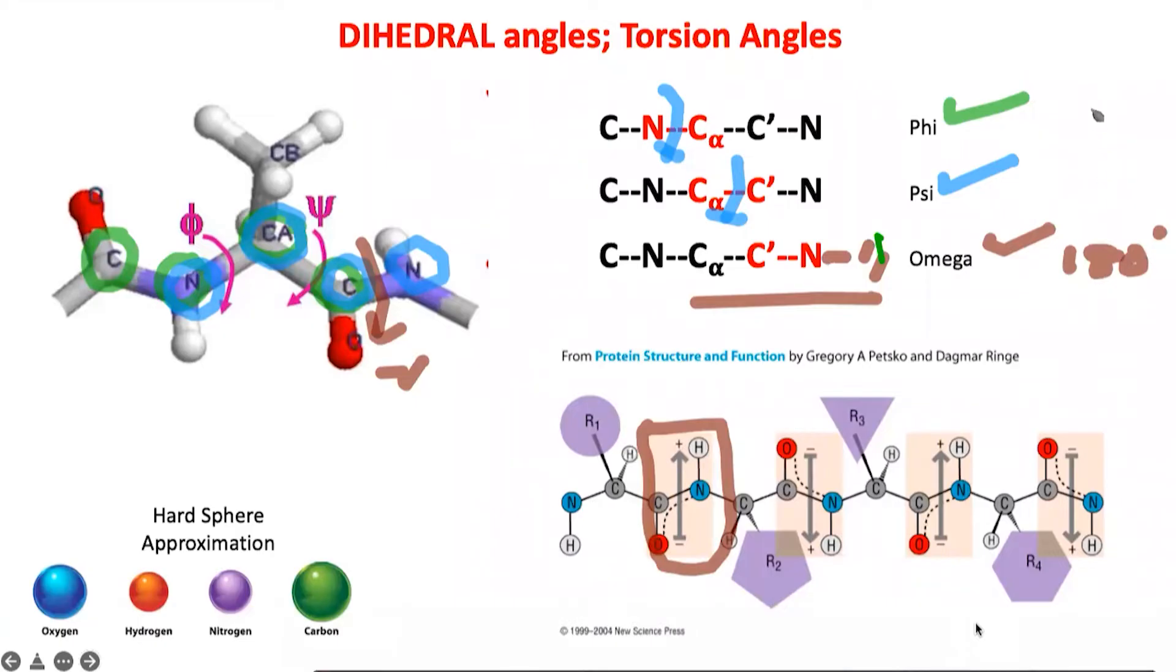Whereas the phi angle and the psi angle—these are both torsion angles—have the ability to rotate across this central bond by about 360 degrees. Now remember the concept of phi, psi, omega and their definitions.